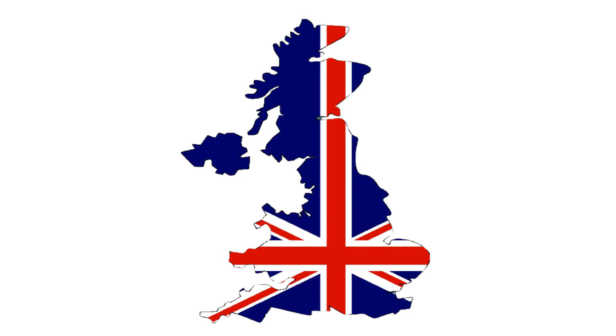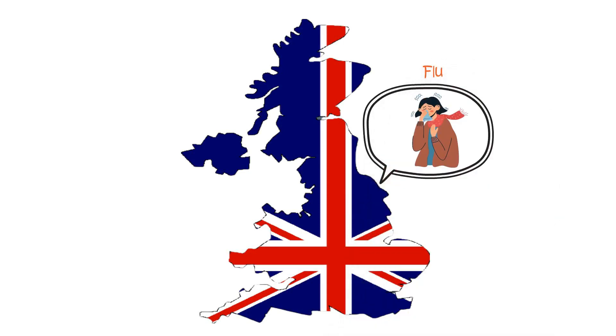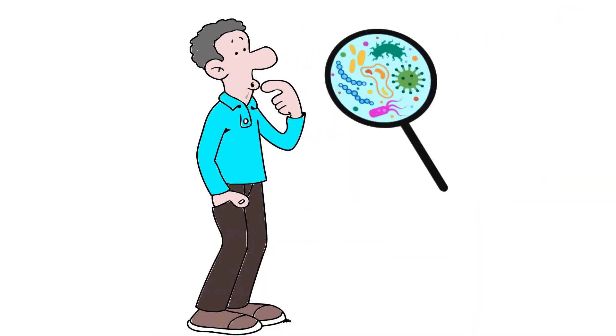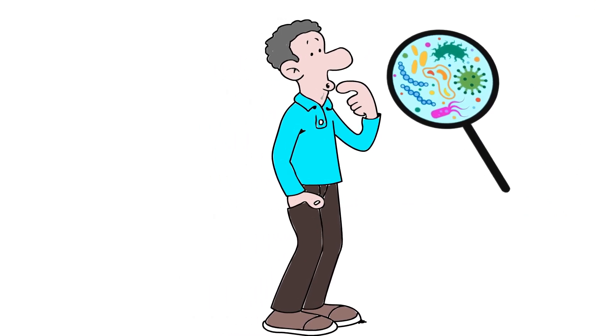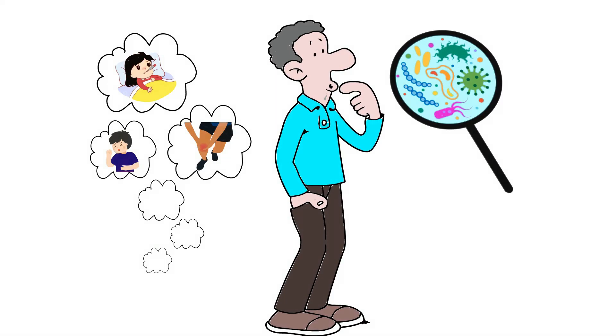In the UK, there is typically a seasonal surge of influenza, commonly known as the flu, that occurs during the winter months. Nevertheless, it's essential to note that various viruses can also lead to flu-like symptoms, such as high fever, muscle and joint aches, coughing, and a range of other manifestations.